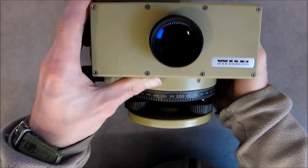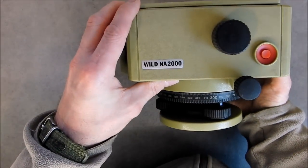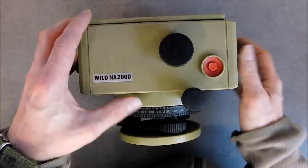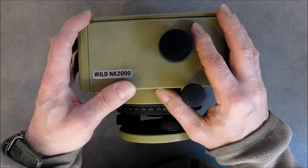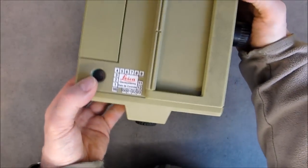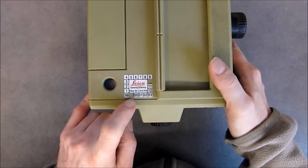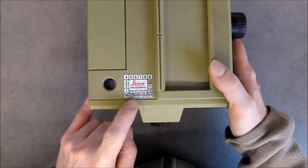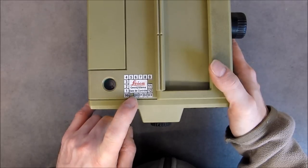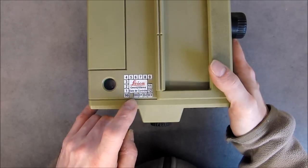Model is Wilde Heerbrugg, it is brand NA 2000. It must be a mid-90s instrument, I believe, or early 90s. There is a calibration sticker from Leica, October of 1999.